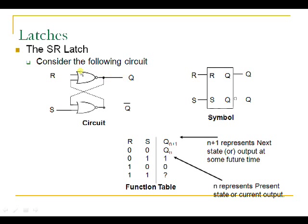This is the circuit of the SR latch, where two NOR gates are used. The Q output of the first NOR gate is connected as feedback input to the second NOR gate, and the Q-bar output of the second NOR gate is connected as feedback input to the first NOR gate. The output of the first NOR gate is Q and the output of the second NOR gate is Q-bar, which is the complement of Q. This is also the graphical symbol used to represent the SR latch.